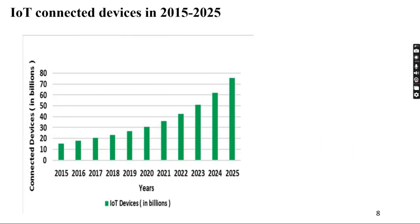The number of IoT connected devices from 2015 to 2025 shows a significant increase in the number of IoT devices connected to the internet. This increase also allows us to implement IoT in agriculture.